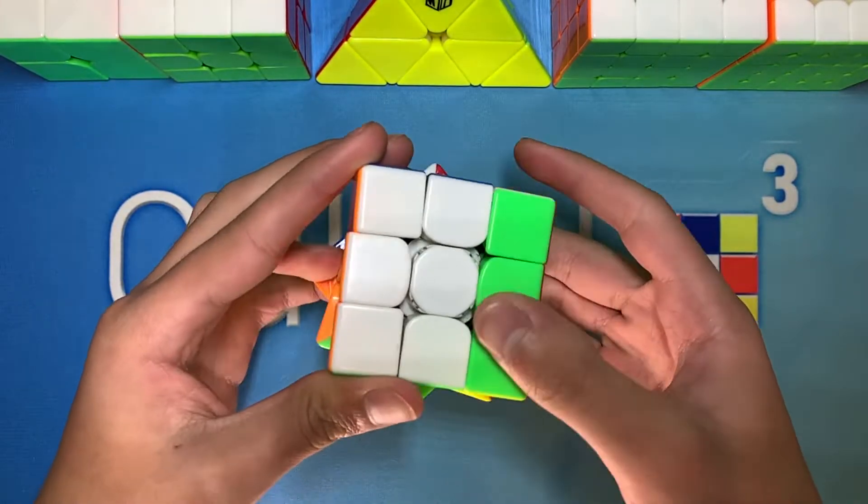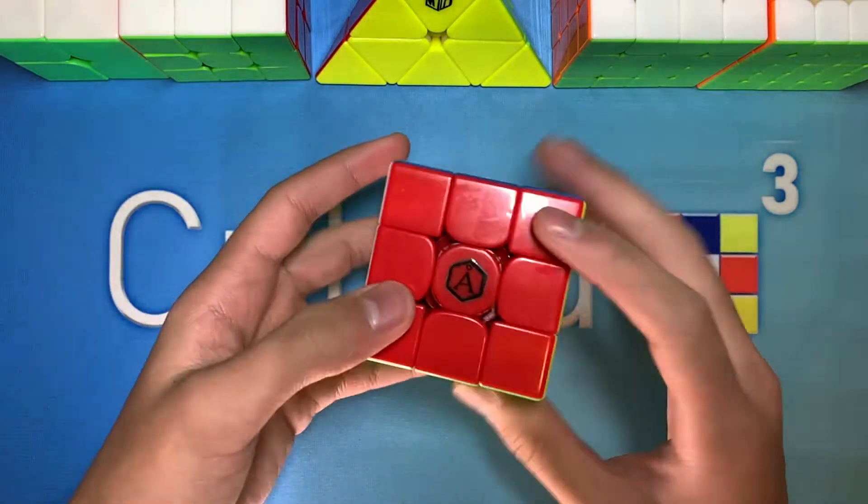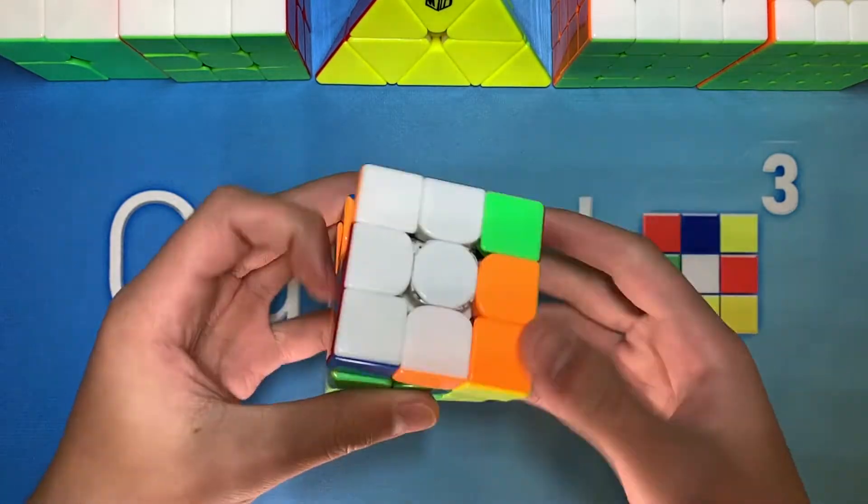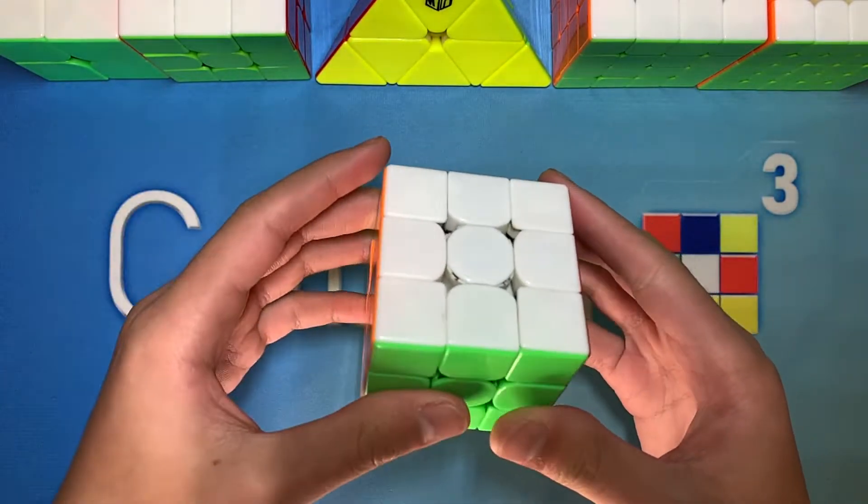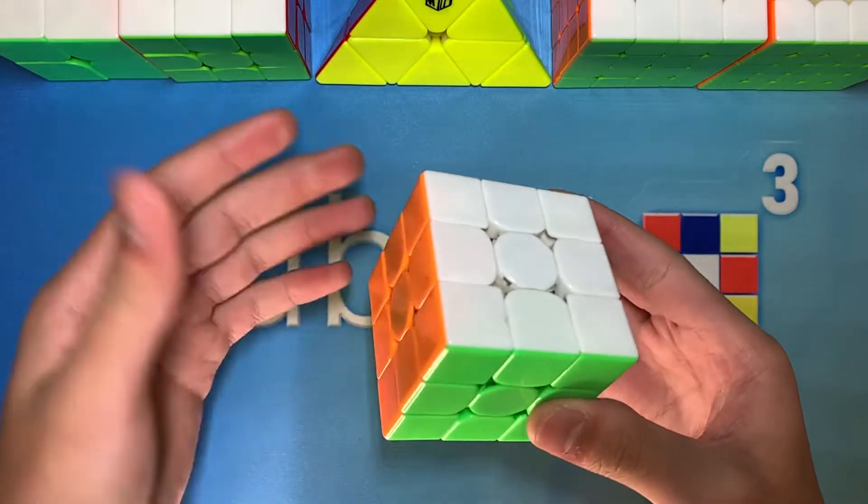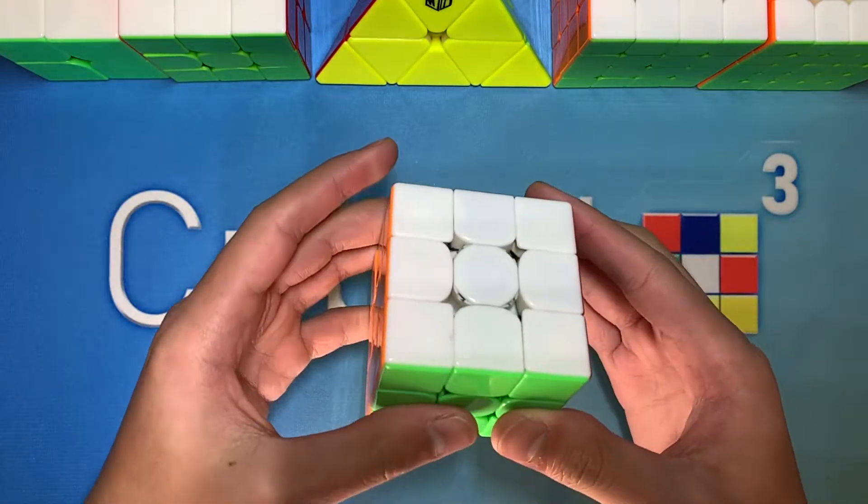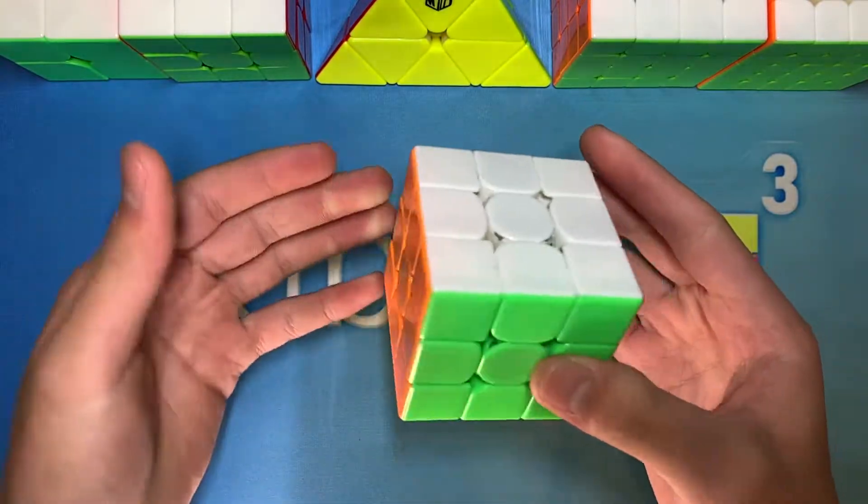For 3x3 one handed, I'll be using the cube that I've been using for a while, which is the Weilong WRM in the Angstrom version from the Cubicle. OH is another event that I don't really practice that much, so my only goals would be to get PRs, which is I'm pretty sure around 23 second average.